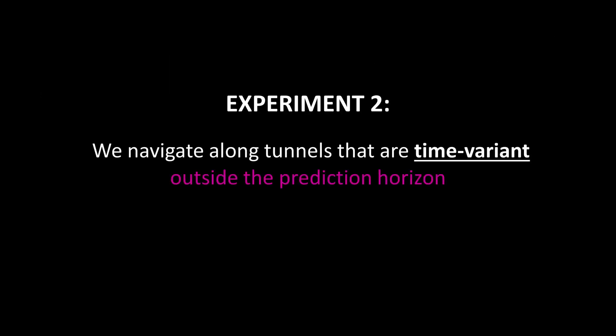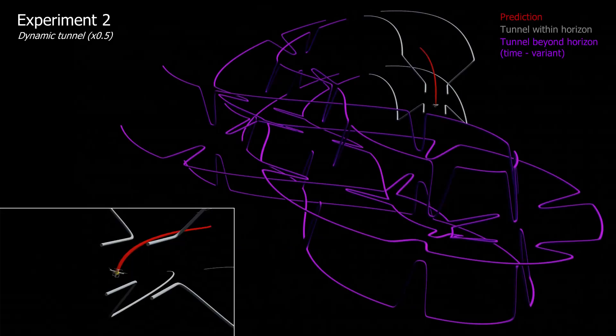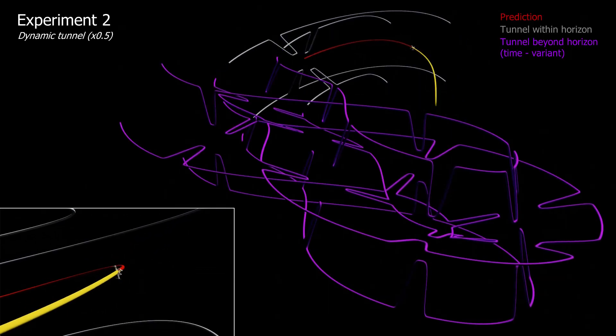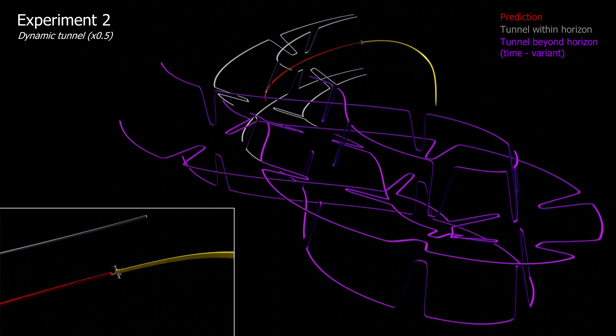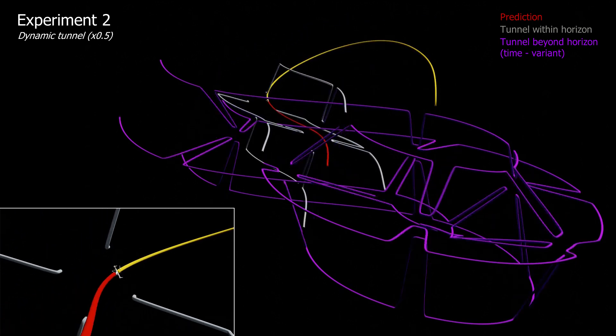To account for more realistic scenarios with changing environments and conditions, we test the method's ability to deal with tunnel variations outside the prediction horizon. Notice that every time the drone passes through a gate, the tunnel is updated.